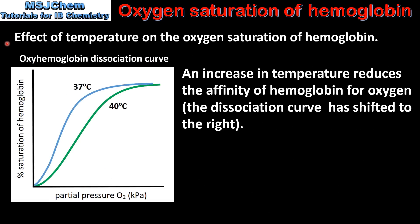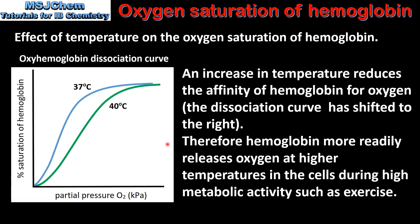Next we look at the effect of temperature on the oxygen saturation of haemoglobin. An increase in temperature reduces the affinity of haemoglobin for oxygen. As we can see from the graph, the dissociation curve has shifted to the right at the higher temperature. Therefore haemoglobin more readily releases oxygen at higher temperatures in the cells during high metabolic activity such as exercise.